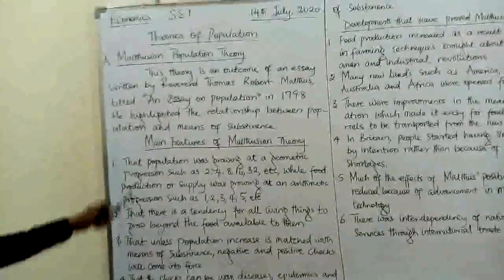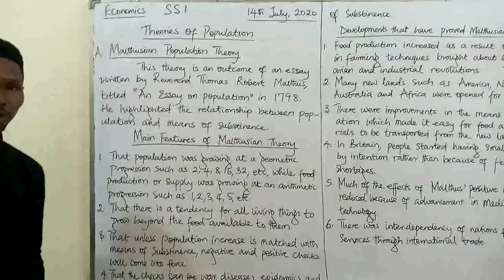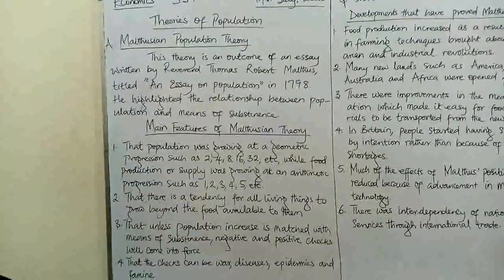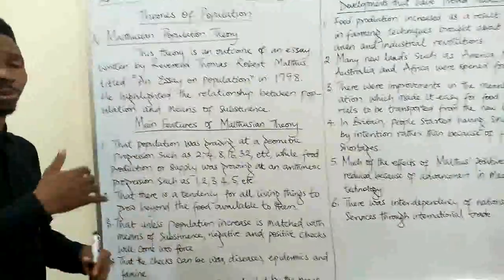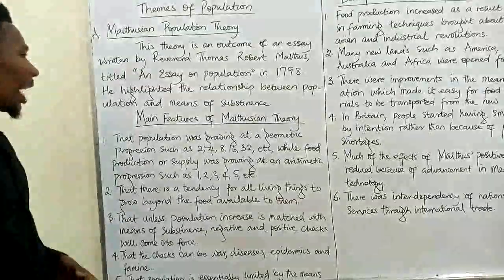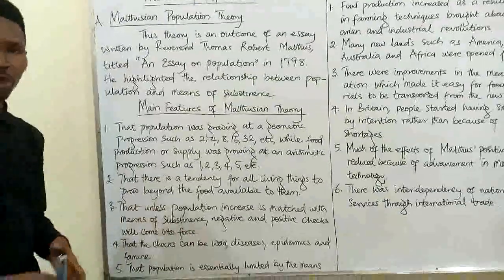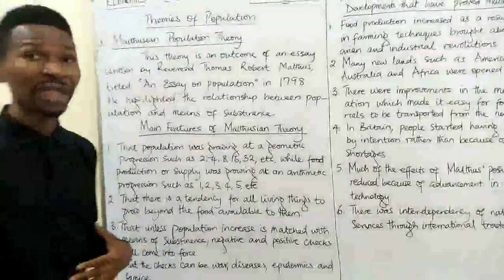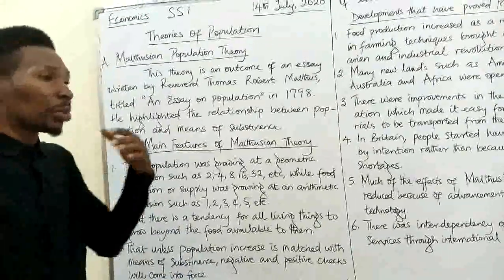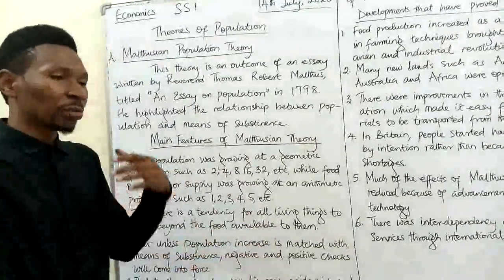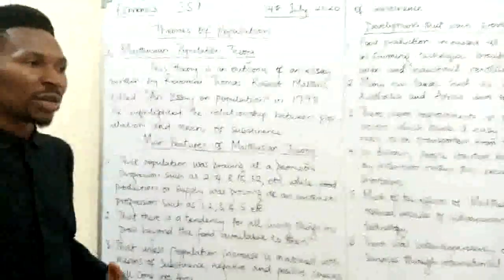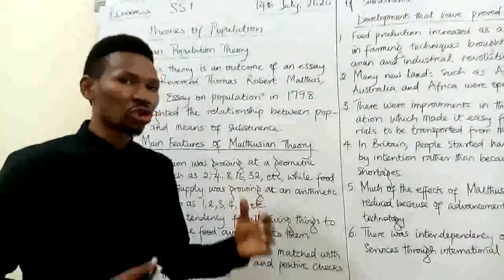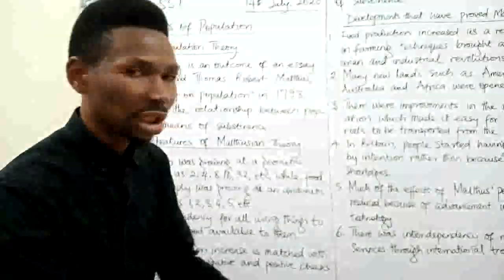These are the main features of his theory on population. The first one is that population was growing at a geometric progression while food production was growing at an arithmetic progression. Geometric progression means that population is growing in a multiplier effect, while arithmetic progression means that food production is growing in an addition effect.